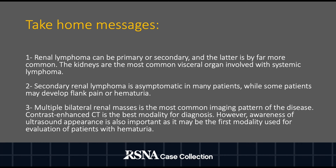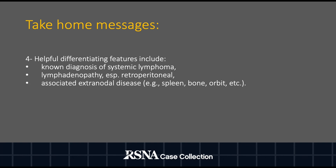However, awareness of ultrasound appearance is also important as it may be the first modality used for evaluation of patients with hematuria. Helpful differentiating features include an established diagnosis of systemic lymphoma, coexistence of lymphadenopathy especially if retroperitoneal, and the presence of extranodal disease, for example within the spleen, the bone, or orbital involvement.